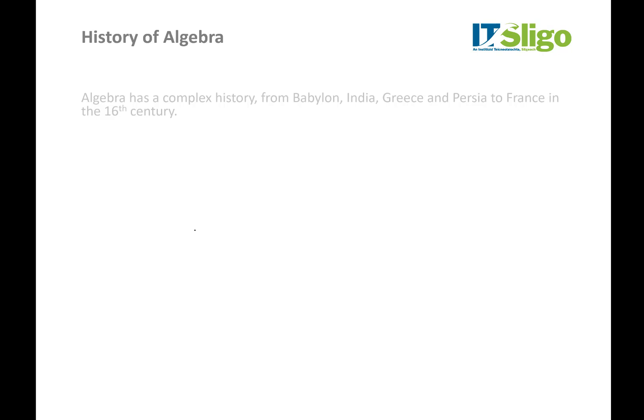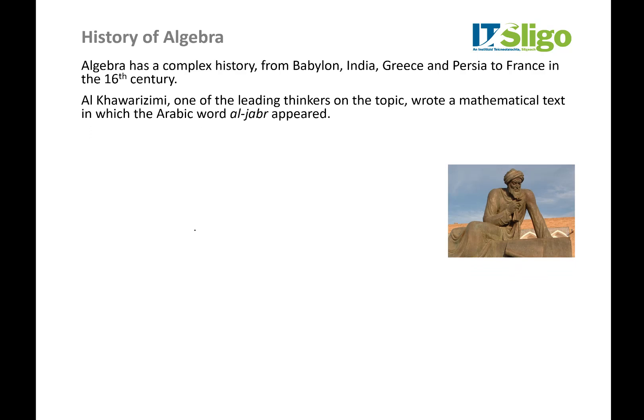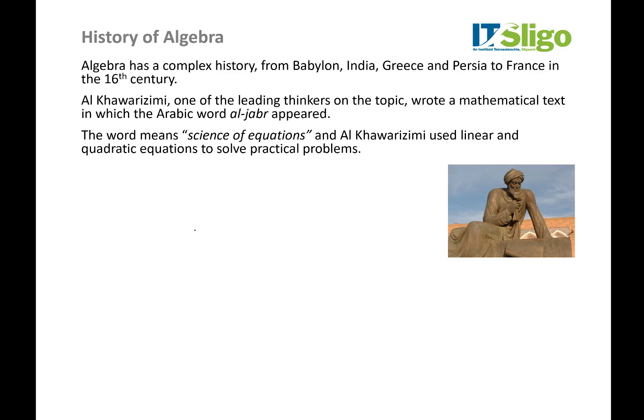A brief history of algebra: it has a fairly complex history from Babylon, India, Greece, Persia, and France, so it developed across various societies. Al-Khwarizmi was one of the leading thinkers on the topic and wrote one of the first papers in which 'Al-Jabr' appeared, which loosely translates as 'the science of equations.' Al-Khwarizmi would be considered one of the top figures for algebra, in the same way Pythagoras stands above the field of trigonometry.